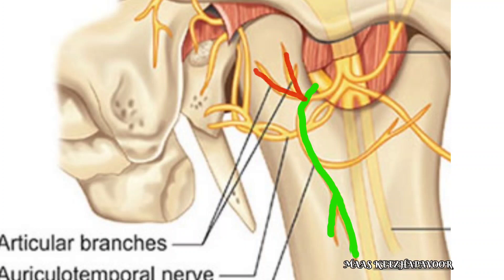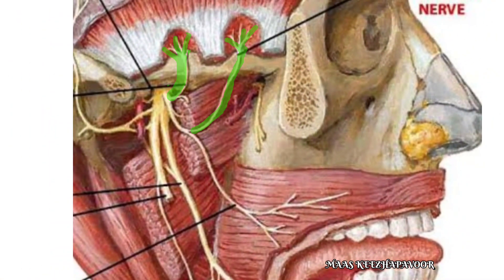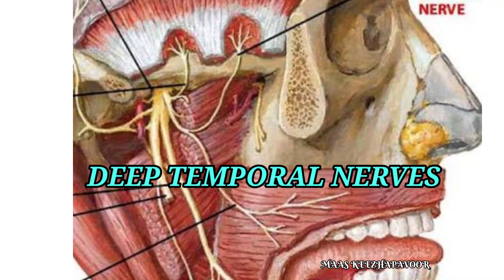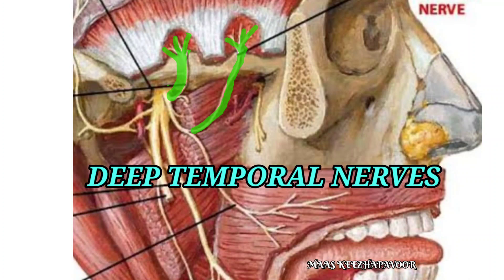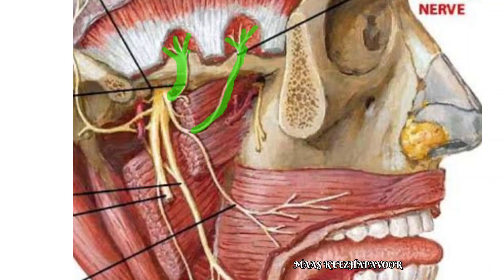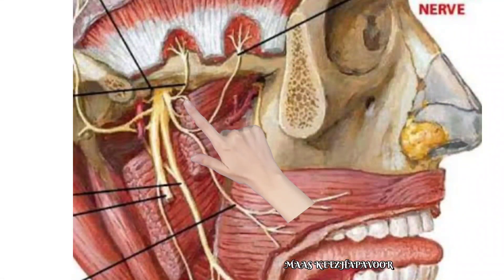The massetric nerve supplies the muscle masseter and gives a branch to the temporomandibular joint, but it does not give a cutaneous branch. Thus it partially obeys Hilton's Law. The deep temporal nerves are usually two in number — anterior and posterior. These nerves emerge at the upper border of the lateral pterygoid muscle and ascend in the temporal fossa to supply the temporalis muscle.